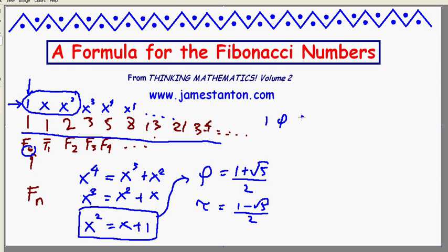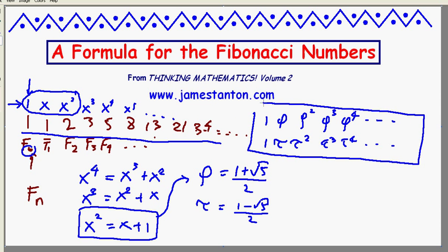Alright, so yes, I now have two sequences. 1, phi, phi squared, phi cubed, phi to the 4th, and so on. And 1, tau, tau squared, tau cubed, tau to the 4th, which each behave exactly like the Fibonacci numbers. That is, phi to the 4 is indeed phi cubed plus phi squared. And phi to the 100 is indeed phi to the 99th plus phi to the 98th, similarly for tau. So these are very Fibonacci-esque.